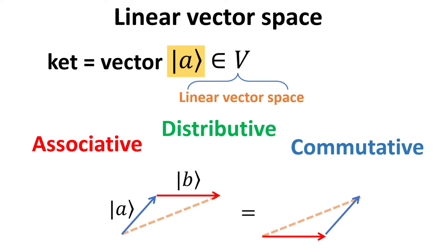For example, the quantum state of the system is represented by such vectors and they are often denoted by the symbol highlighted in yellow, called a ket.